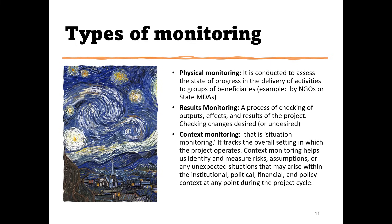Going to the field as an M&E professional requires preparation — you don't just carry your bag and go. You have to prepare so that you know exactly what you are looking out for when you get to the field. Result monitoring is the process of checking outputs — how they are delivering the results you want to see. In a results-based M&E system, results go beyond outputs. For example, the government is not just interested in outputs; they want to know how what you are doing is improving the lives of people. Whether people are actually receiving palliatives is more important than the process.